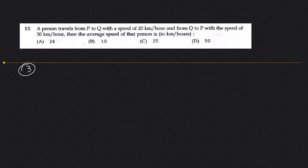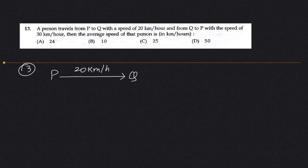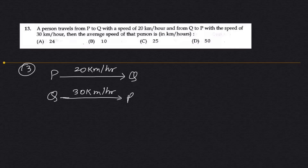Let's continue with question 13. A person travels from P to Q with a speed of 20 km/h, then from Q to P — same distance — with an increased speed of 30 km/h.